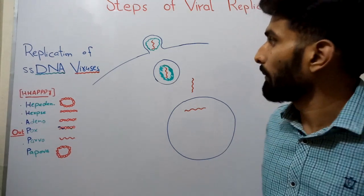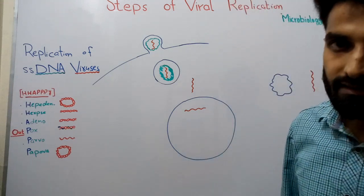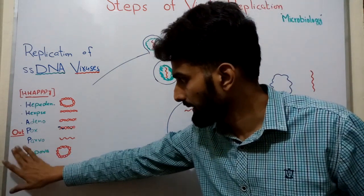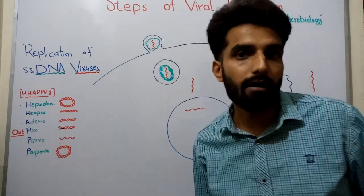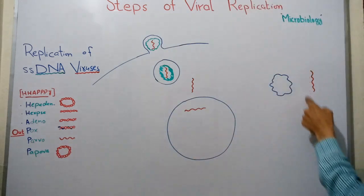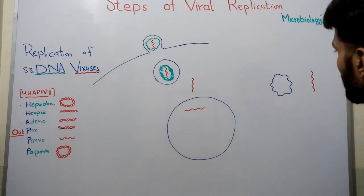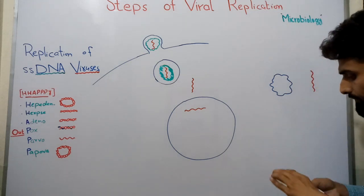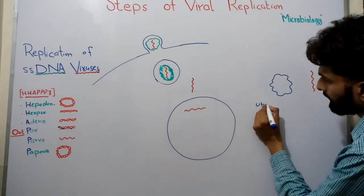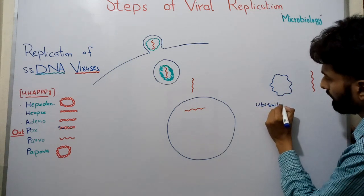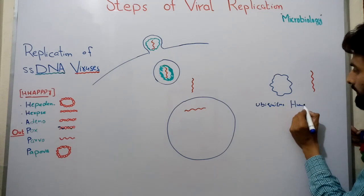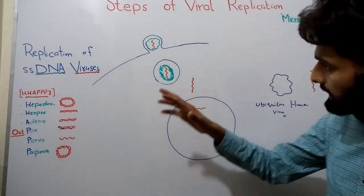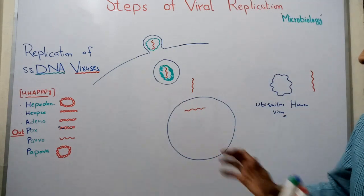Welcome back. Let's talk about the replication of single-stranded DNA viruses. As mentioned in the previous class, examples of single-stranded DNA viruses include termoviruses, which are linear single-stranded DNA viruses, and another type that is circular — an ubiquitous human virus that is very small. These two are the main examples of single-stranded DNA viruses.